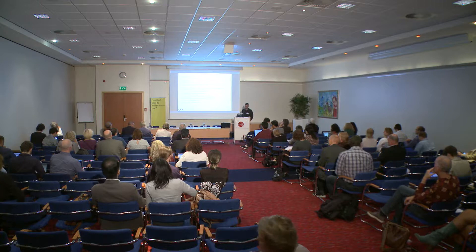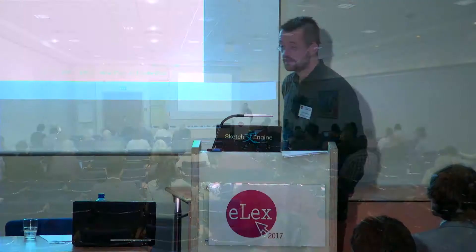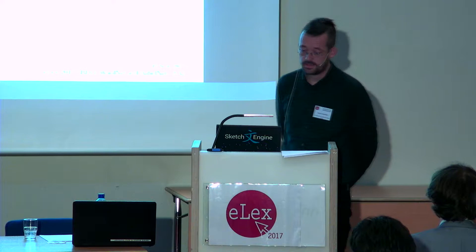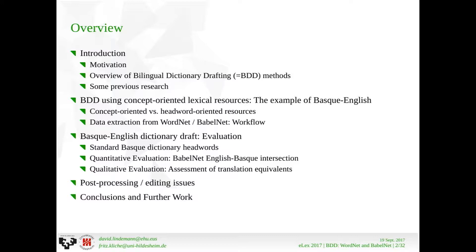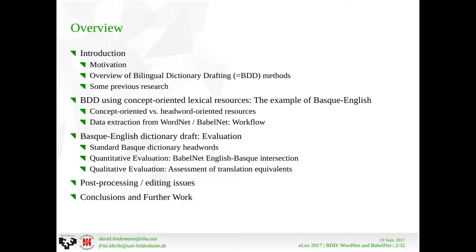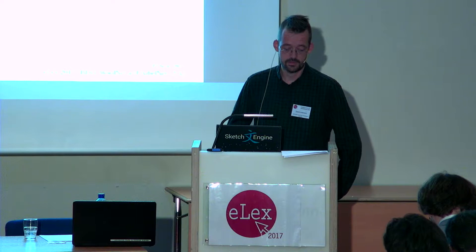Here is an overview of my talk. First, a brief introduction to the motivation behind our research, an overview of bilingual dictionary drafting methods, and some previous research on that. In the first main part I will explain what we want to do, what type of resource we are obtaining our data from, how we have extracted the data, and built the dictionary draft, and about what we are looking for — English equivalents to standard Basque dictionary headwords — and what we have found. In the second main part we will present the quantitative and qualitative evaluation of the obtained bilingual dictionary draft, then draw some conclusions and have an outlook to the future.